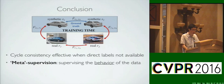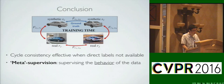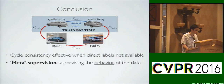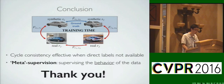Cycle consistency is a kind of meta-supervision — a constraint on how the data should behave. We believe that this idea could be quite powerful for a number of other domains where obtaining direct labels is not feasible. Thank you.